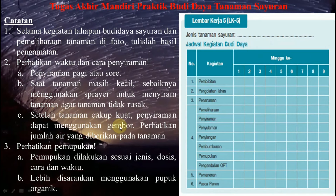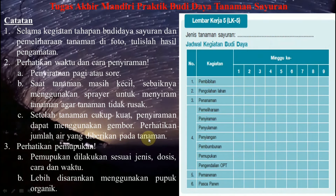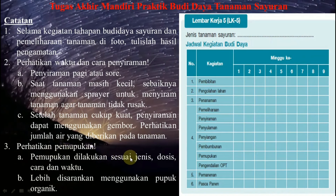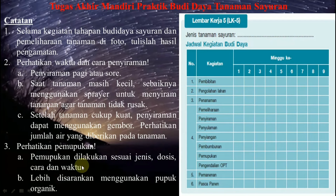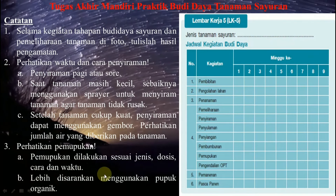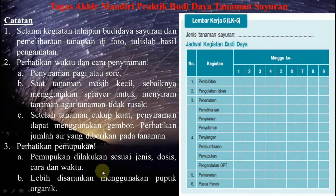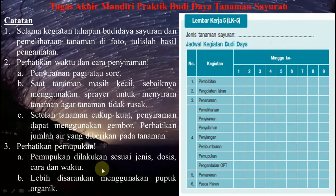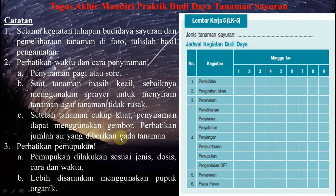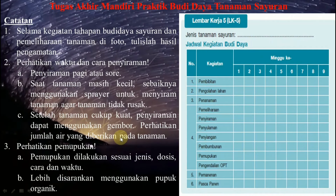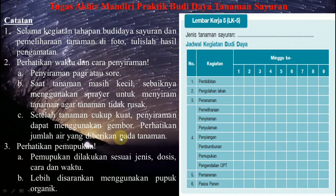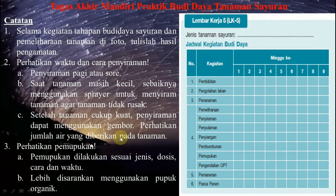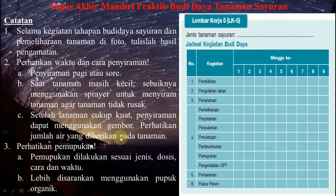Setelah tanaman cukup kuat, penyiraman dapat menggunakan gembor. Perhatikan jumlah air yang diberikan pada tanaman. Ketiga, perhatikan pemupukan—dilakukan sesuai jenis, dosis, cara, dan waktu. Lebih disarankan menggunakan pupuk organik. Silahkan lakukan tugas mandiri budidaya tanaman sayuran di pekarangan menggunakan polybag. Minimal 3 jenis tanaman sayuran, bisa memilih kangkung, cabe, tomat, atau yang lainnya.